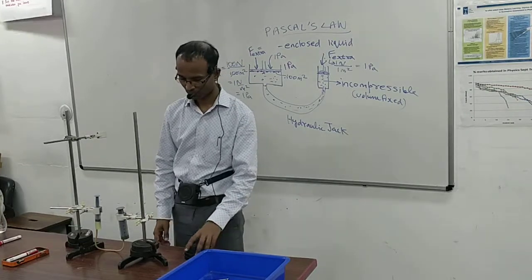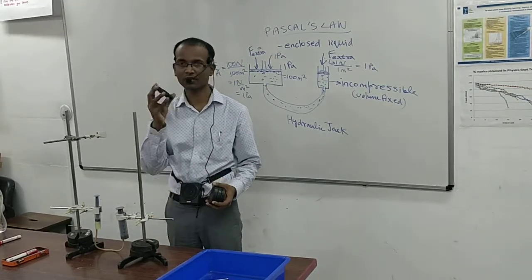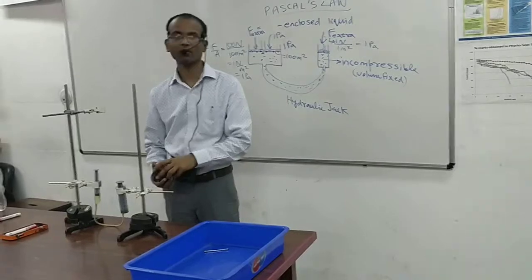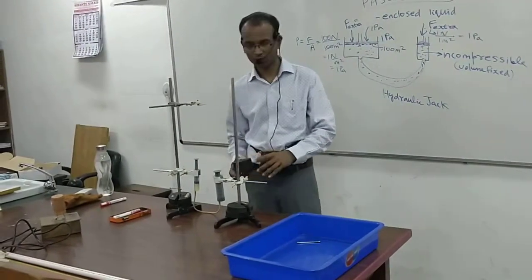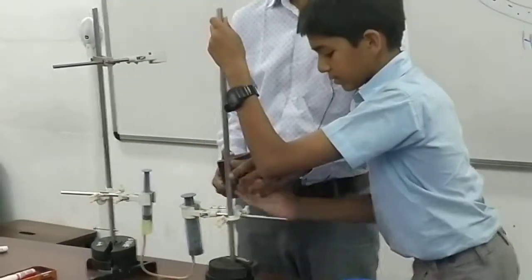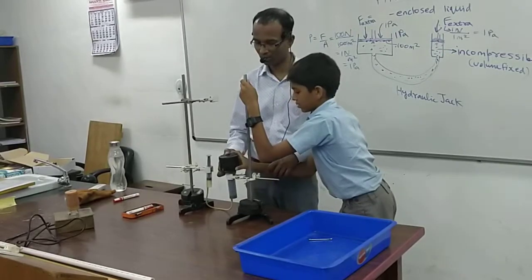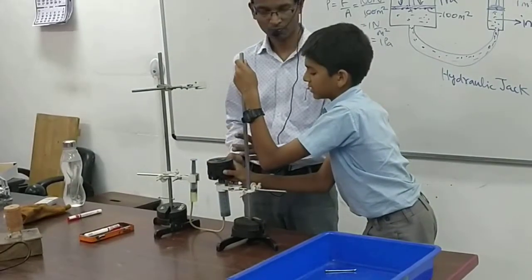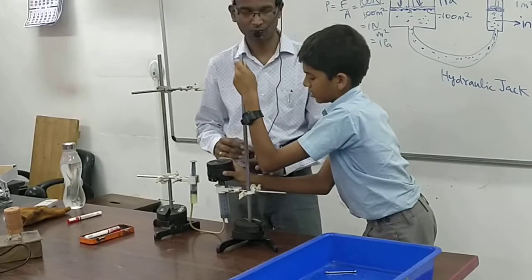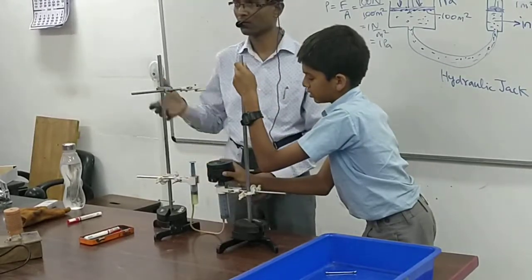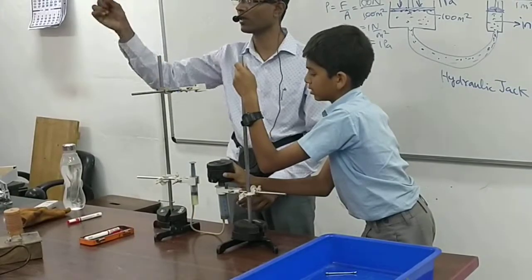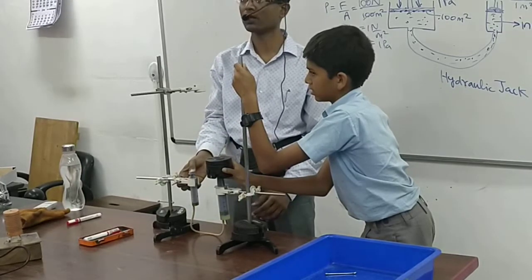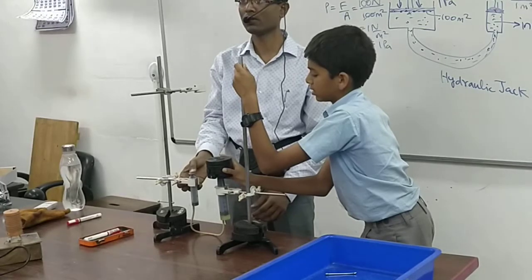Now let us see it in action. Each weight is half a kg, so we have 2 kg total on the large piston. I need one assistant to hold it so it doesn't topple and support the weights. If I press the small piston with my thumb, do you think I can exert a force of 2 kg with my thumb? It's very easy actually — it doesn't feel like I'm lifting 2 kg with my thumb.